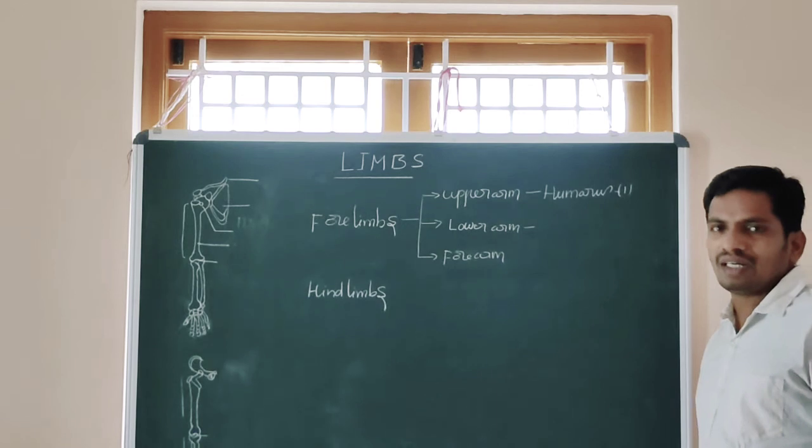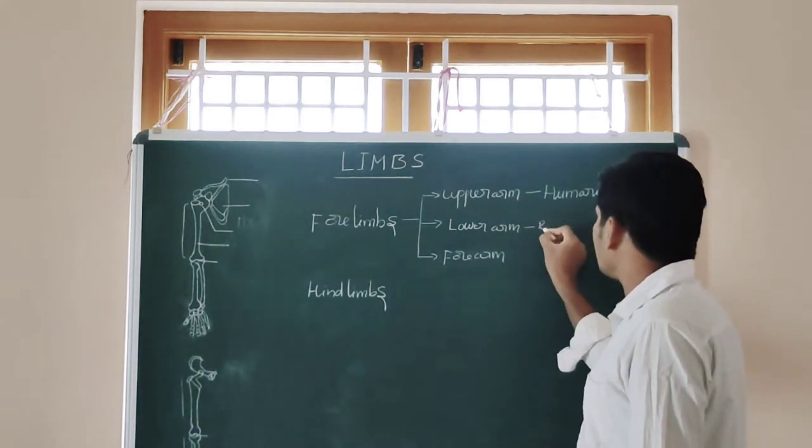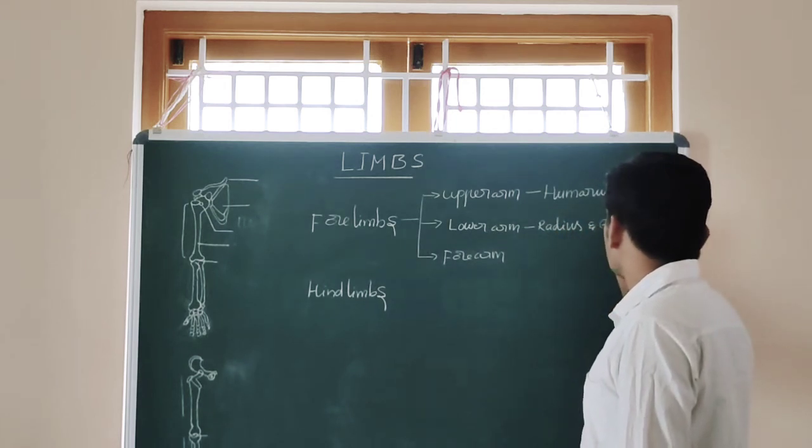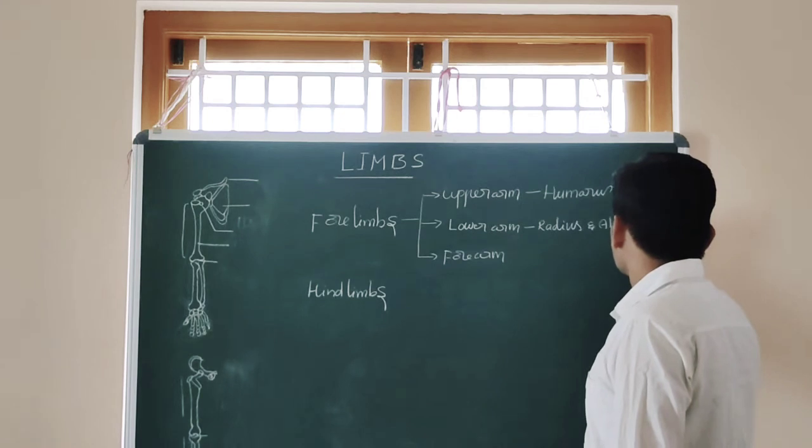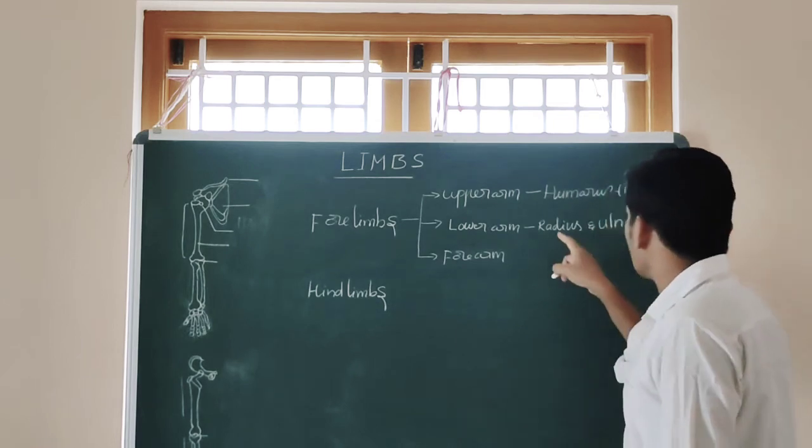The lower arm consists of two bones which are radius and ulna. Radius and ulna, these are the two bones.